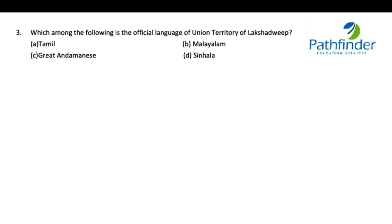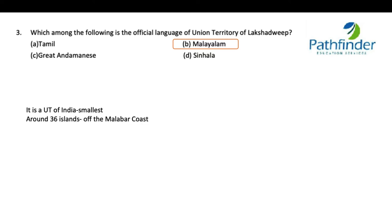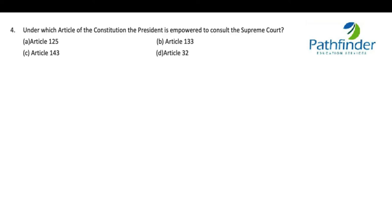Next: which of the following is the official language of the Union Territory of Lakshadweep? The options are Tamil, Malayalam, Great Andamanese, or Sinhala. The correct answer is Malayalam, due to its proximity to Kerala. Lakshadweep is one of the smallest Union Territories in India. Its capital is Kavaratti and it has around 36 islands along the Malabar Coast.